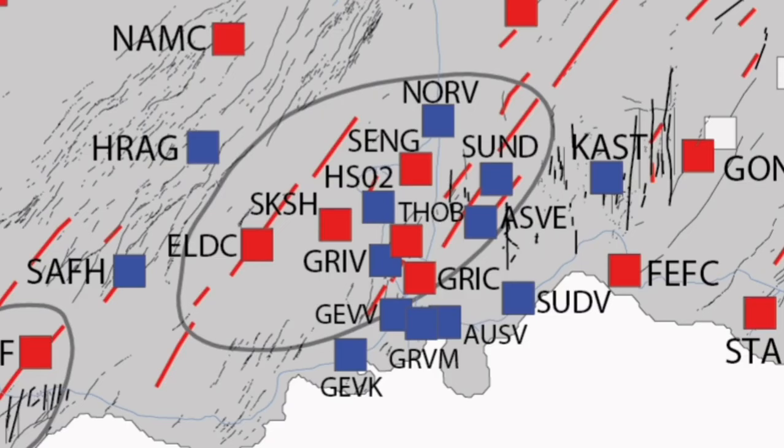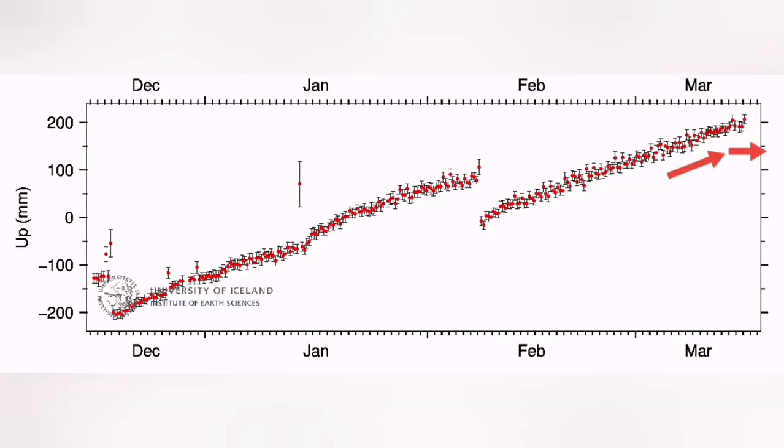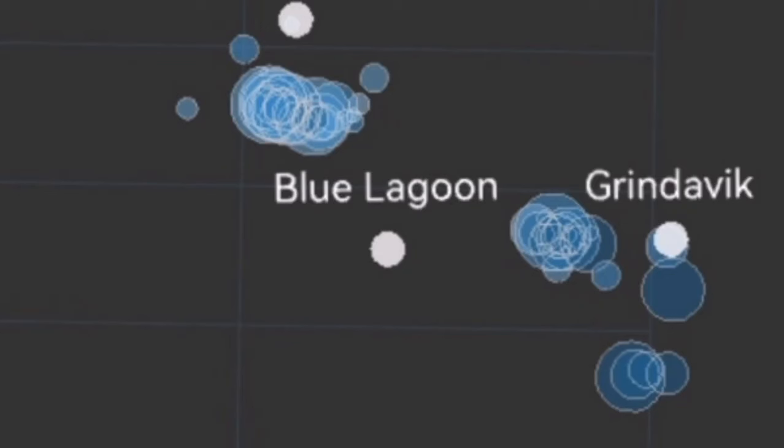The Svartszengi volcanic system has erupted three times already. We are seeing the Svartszengi itself, the land uplift has been reduced slightly, then again a little bit rising. But most of the trend was that it didn't rise as fast as it would be doing previously, so we show it by the minus sign.